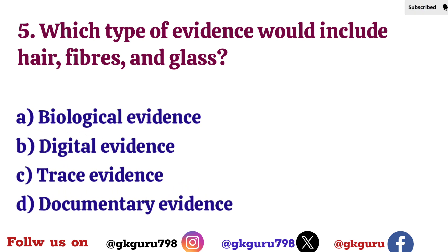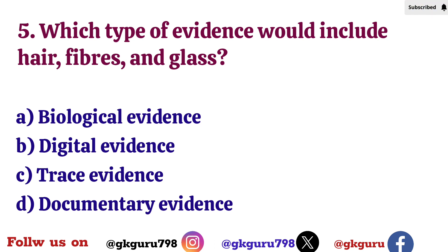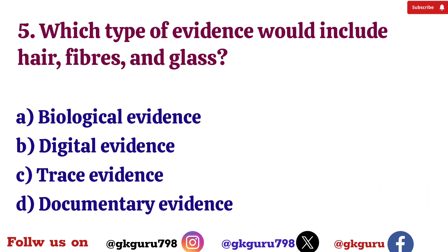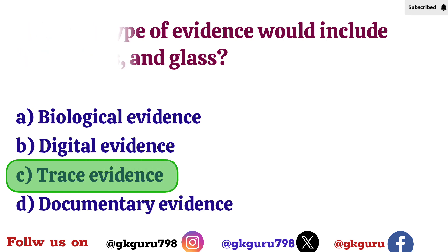Fifth question: Which type of evidence would include hair fibers and glass? Option A: Biological evidence. Option B: Digital evidence. Option C: Trace evidence. Option D: Documentary evidence. Correct answer: Option C — Trace evidence.